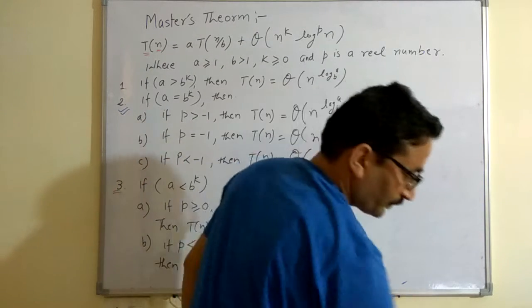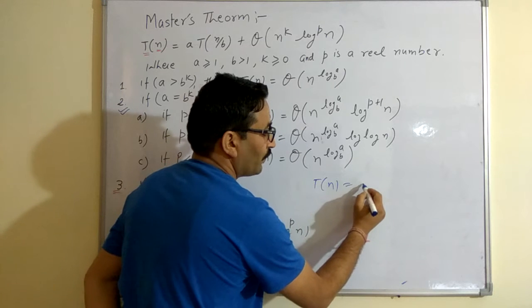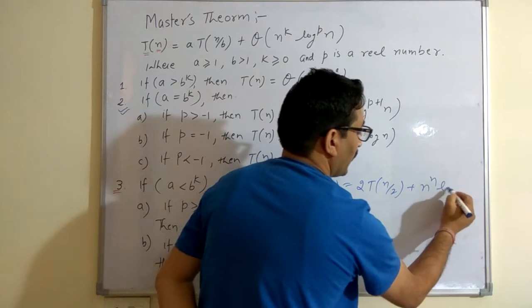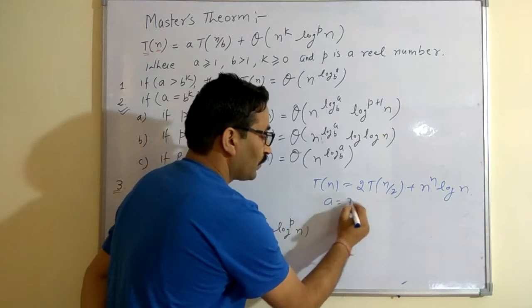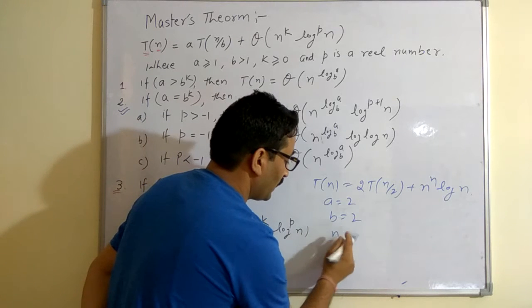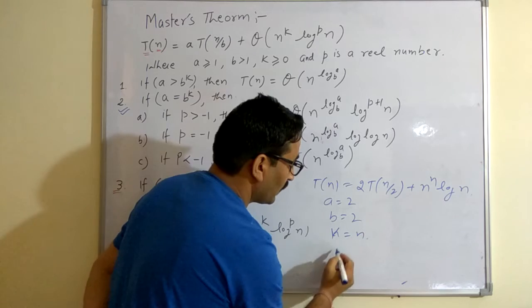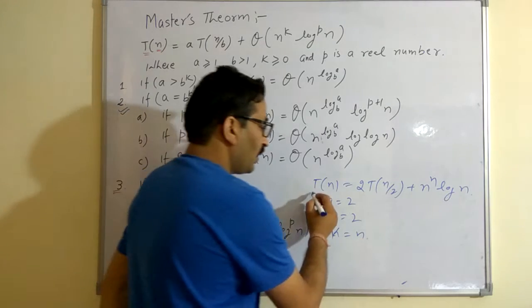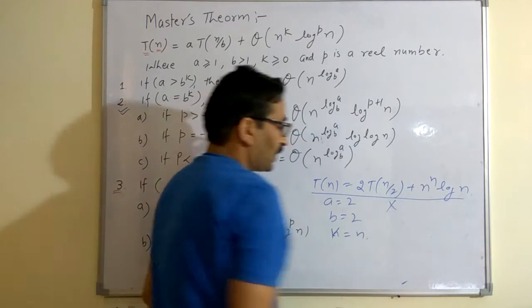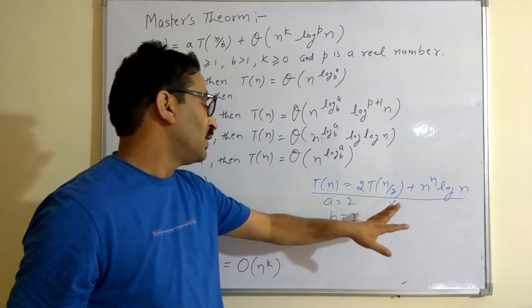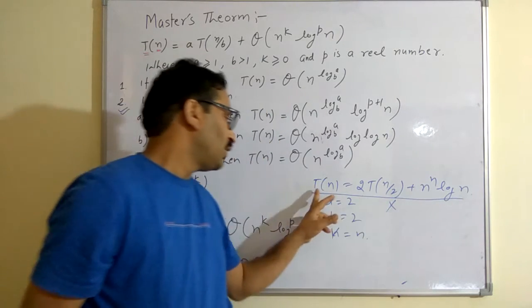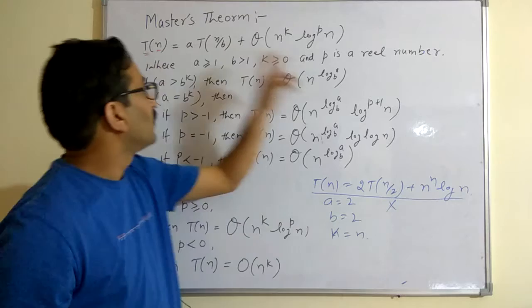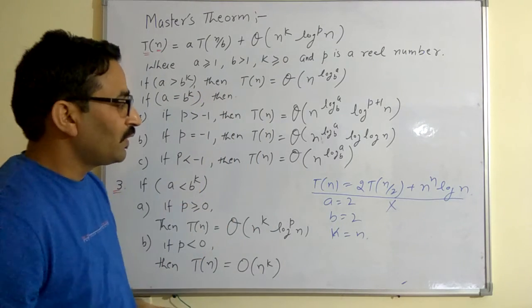Next example: T(n) is equal to 2T(n/2) plus n raised to n·log(n). Here A is equal to 2, b is equal to 2, and K is equal to N. But the value of K must always be greater than or equal to 0 as a constant — here K is a variable. So again we cannot apply the Master Theorem on this type of recursive function. The Master Theorem cannot be applied when parameters like A or K are variables rather than constants.